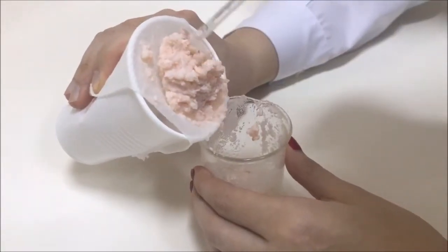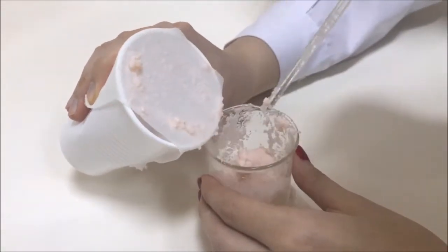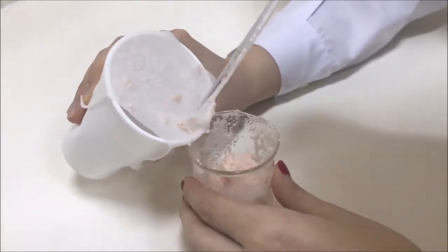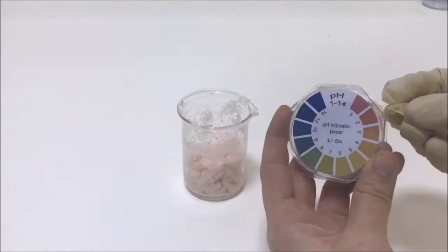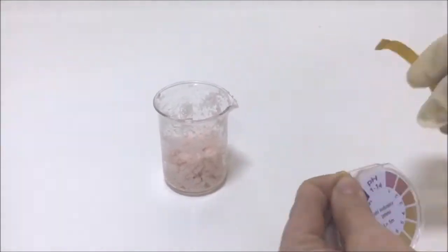Place the solid soap back into the beaker using the stirring rod. Measure the pH of the soap with new pH paper.